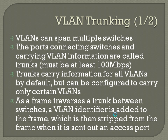VLAN trunking — VLANs can span multiple switches. The ports connecting switches and carrying VLAN information are called trunks, and they always have to be at least 100 megabits per second — fast Ethernet or gigabit or higher. Trunks carry information for all VLANs by default, but can be configured to carry only certain VLANs. You can prune out specific VLANs if there's no reason to carry that VLAN traffic. As a frame traverses a trunk between switches, a VLAN identifier is added to the frame, and that identifier is stripped when it's sent out to the access port for the corresponding user.